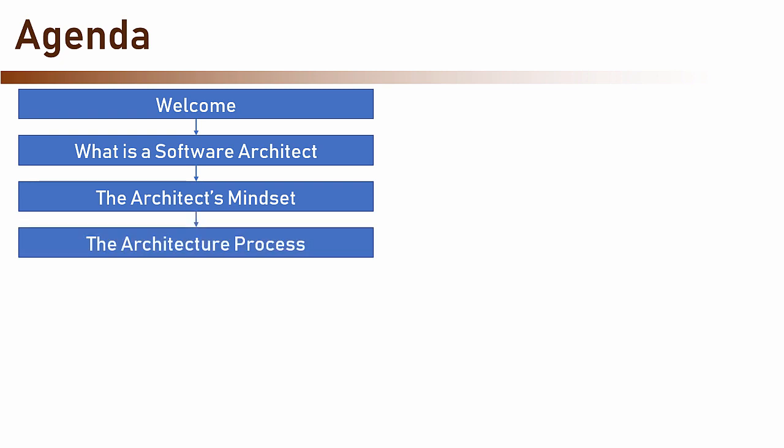The fourth section in this course outlines the architecture process — what are the actual steps the architect should take in order to build a robust yet practical architecture for the system she is working on? The next sections deep dive into this process and detail the specifics of each step.